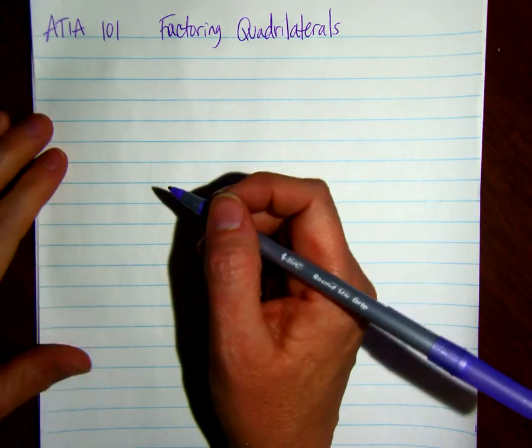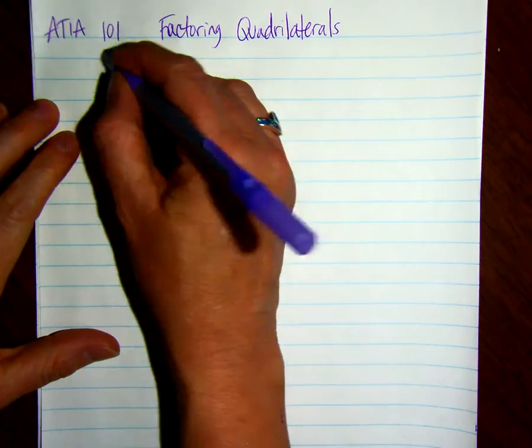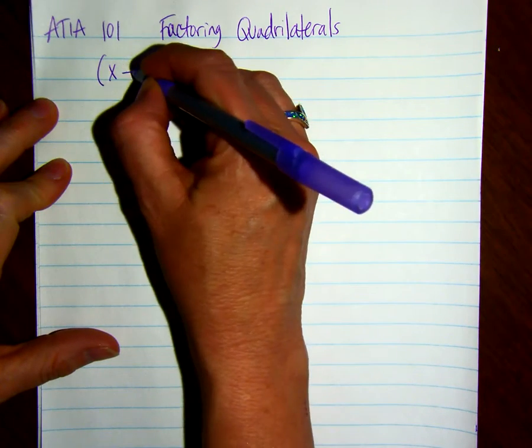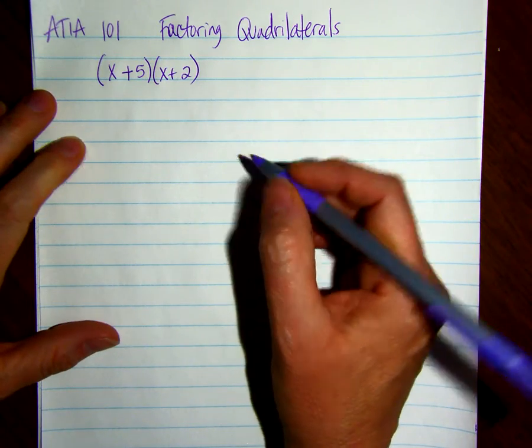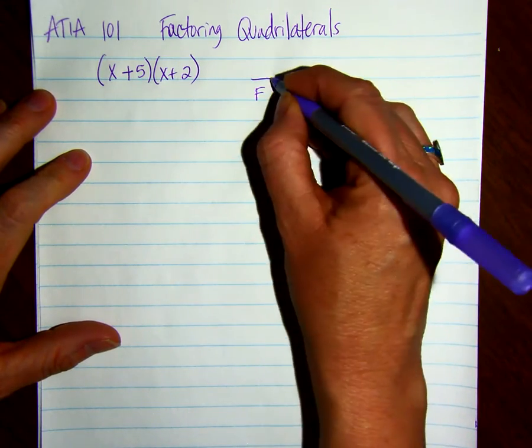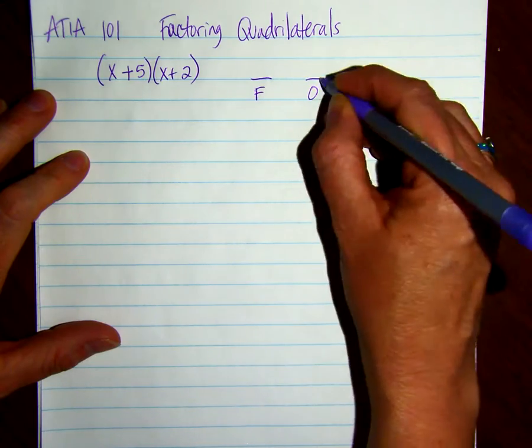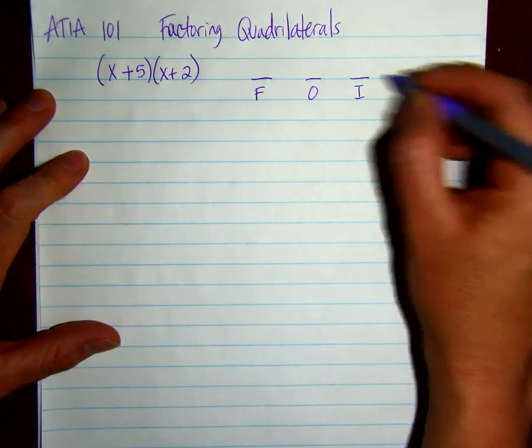When we multiplied binomials, so when we had x plus 5 times x plus 2, we did what was called FOIL, F-O-I-L.